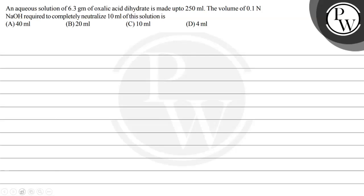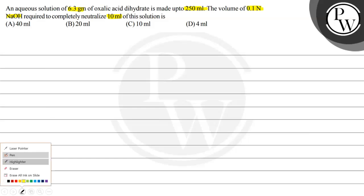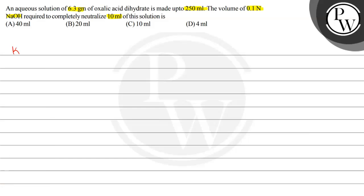Hello, let's read this question. The question says an aqueous solution of 6.3 grams of oxalic acid dihydrate is made up to 250 ml. The volume of 0.1 normal NaOH required to completely neutralize 10 ml of this solution is — and we have four options. The key concept here is chemical equivalence.